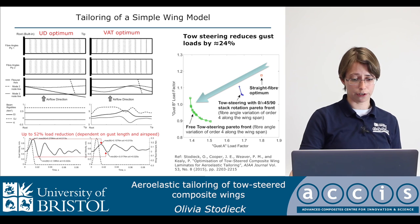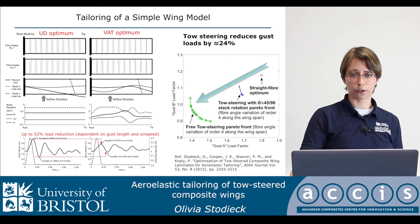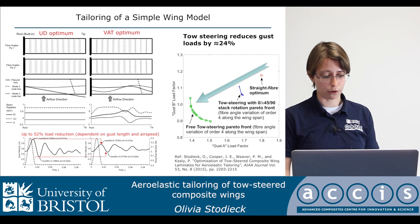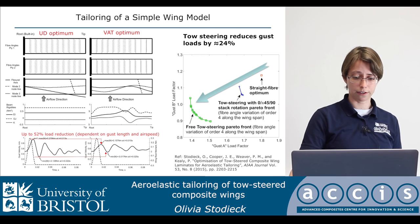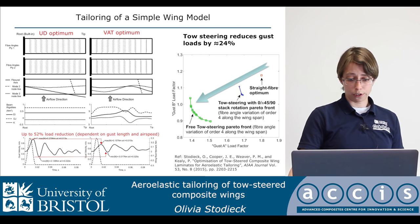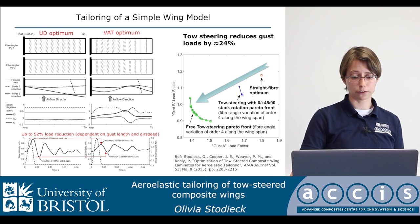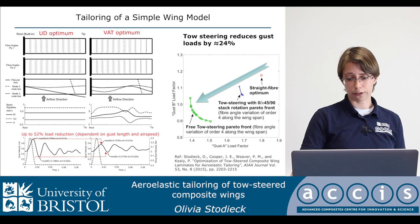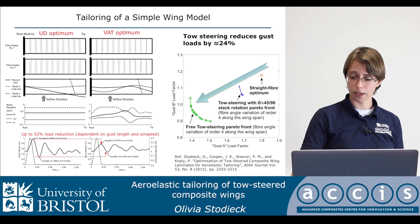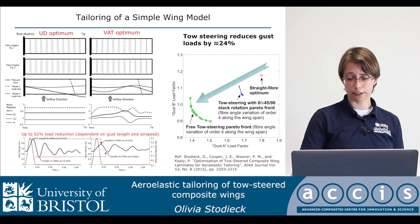By plotting the bending moment response over time to a gust input, we found that the gust load was reduced by over 50 percent for this particular case. This was achieved purely by tailoring the stiffness and the bend-twist coupling along the wing. For the UD case we have constant stiffnesses along the wing, while for the VAT case we have variable stiffness, all at constant laminate thickness.